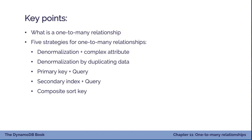To wrap up this chapter: we looked at what a one-to-many relationship is, then walked through five strategies in DynamoDB. The first two use denormalization — with a complex attribute or by duplicating data. Strategies three and four use a composite primary key to combine multiple item types into a single item collection, queried together — either via the primary key or a secondary index — pre-joining your data. Finally, the composite sort key encodes multiple hierarchy levels into the sort key, letting you search at different levels. Next chapter covers many-to-many relationships.